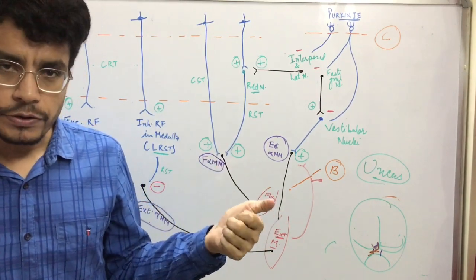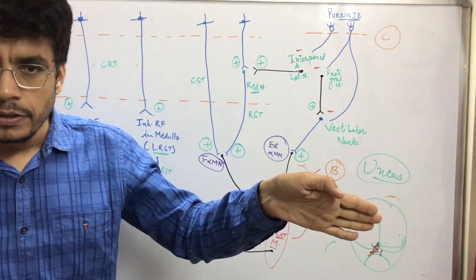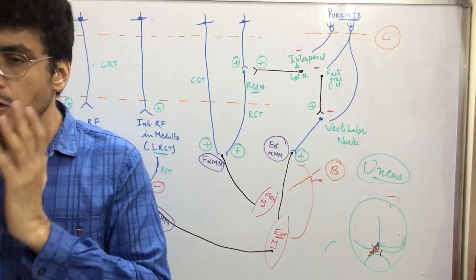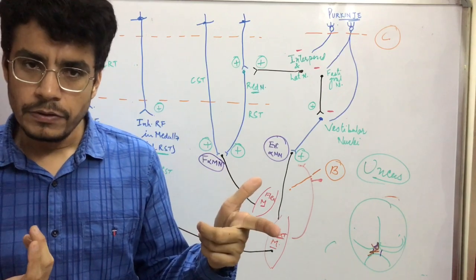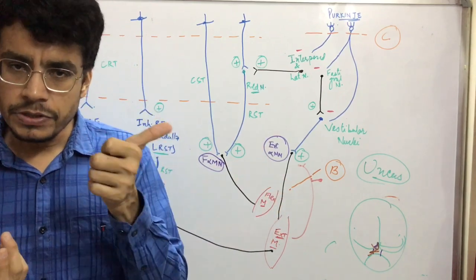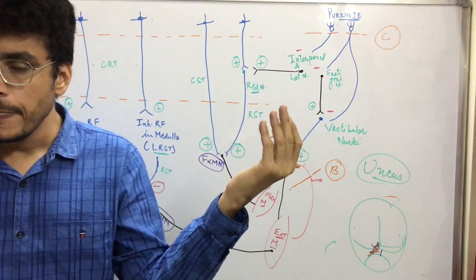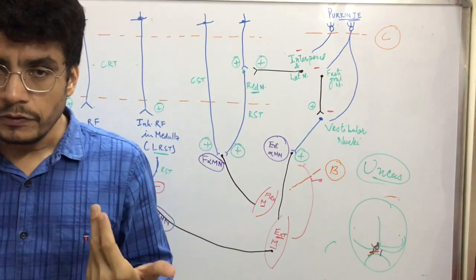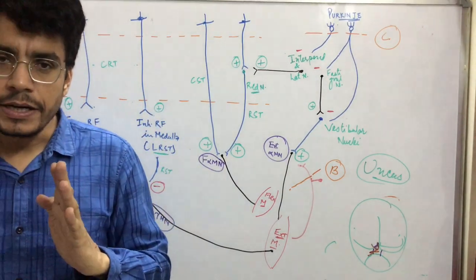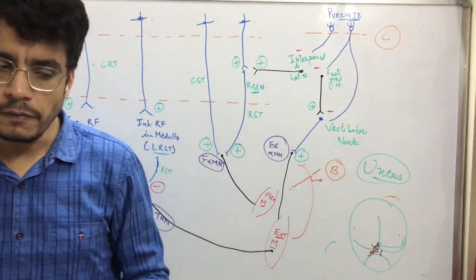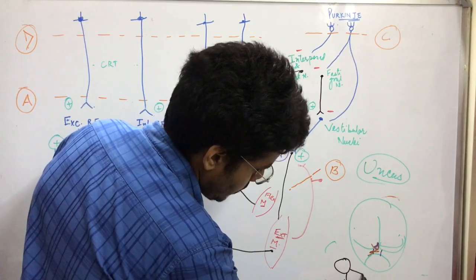If you recall, the extra-ocular muscles follow the rule LR6SO4 — LR6 means lateral rectus (sixth nerve, deviation outward), SO4 means superior oblique (fourth nerve). So if there is loss of the ipsilateral oculomotor nerve, the remaining two — the fourth as well as the sixth cranial nerve — their function will get exaggerated. The sixth cranial nerve action is to move the eye outward, and the superior oblique will pull down. So initially, when the ipsilateral oculomotor nerve gets compressed, the eye of the affected side will be down and out — deviated downward and outward.